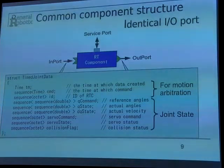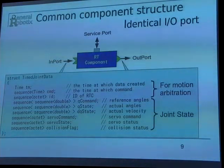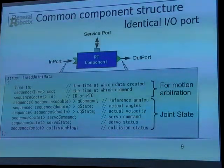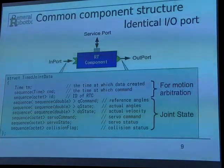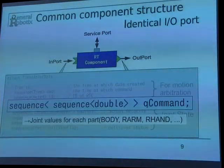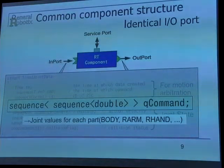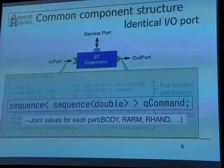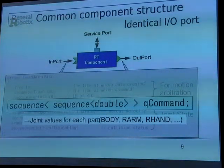The data being sent through the data ports is shown here. This data includes timing — timing is needed to check command arbitration — and joint angles. The data most people will be using would be the joint angle data, which is the joint angle command. The joint angles are a sequence of sequences because they are grouped by body part, like right arm, left arm, body, or head. This makes it easier to check what part a controller is trying to affect.